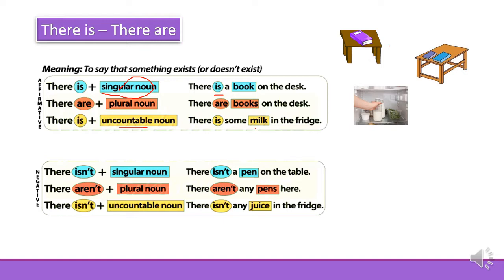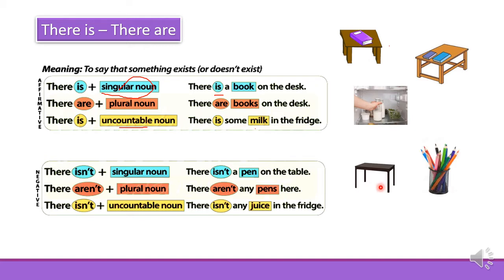In the negative form we use there isn't and there aren't. For example, there isn't a pen on the table. There aren't any pens here — just pencils. There isn't any juice in the fridge.